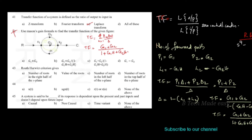For example, with rows S4, S3, S2, S1, S0 in the Routh array, the number of sign changes in the first column gives the number of roots which lie on the right half of the s-plane. The Routh-Hurwitz criterion gives the number of roots on the right half of the s-plane. Option A is the correct answer.